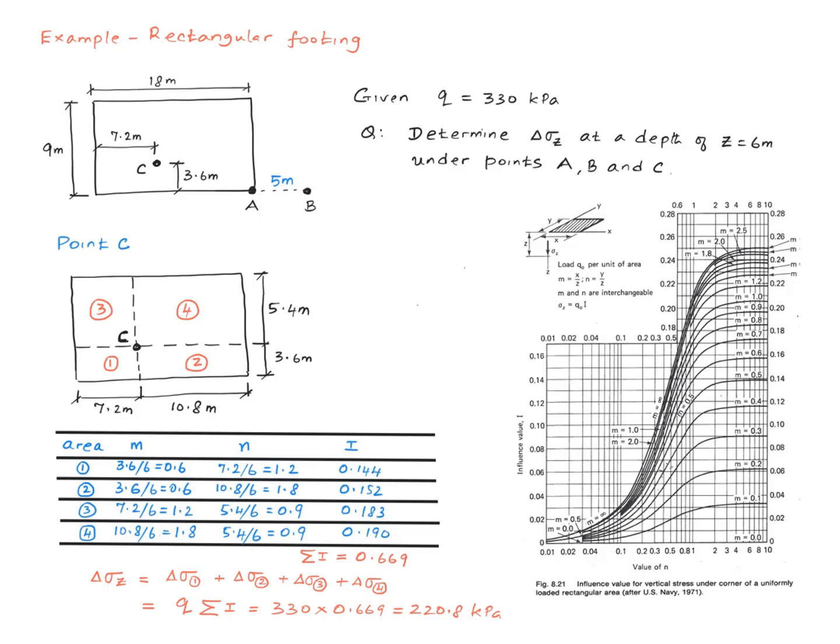Why are we summing up? Because we know the total contributions coming from each of these rectangles is going to be summed up, right? Then you apply this equation right here, which basically says the change in vertical stress under point C equals change in vertical stress due to rectangle 1 plus the one due to rectangle 2 plus the one due to rectangle 3 plus the one due to rectangle 4.